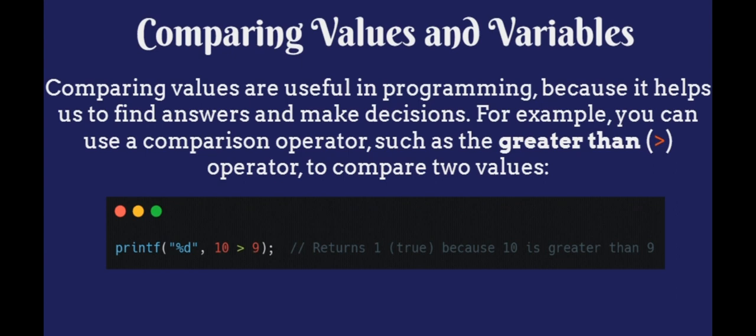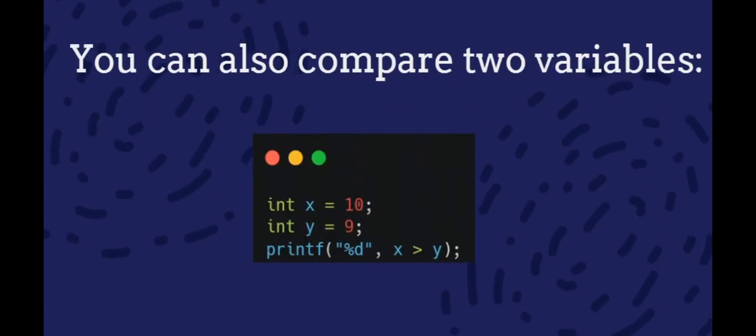Comparing values is useful in programming, because it helps us to find answers and make decisions. For example, you can use a comparison operator, such as the greater than operator, to compare two values. You can also compare two variables.